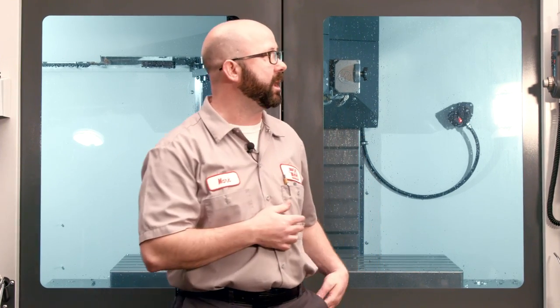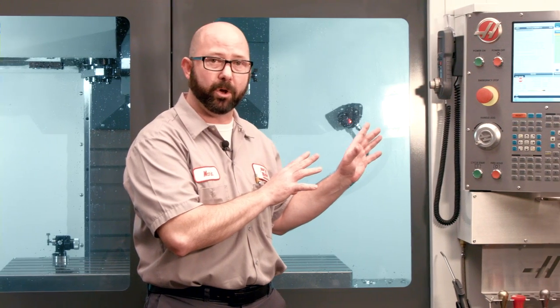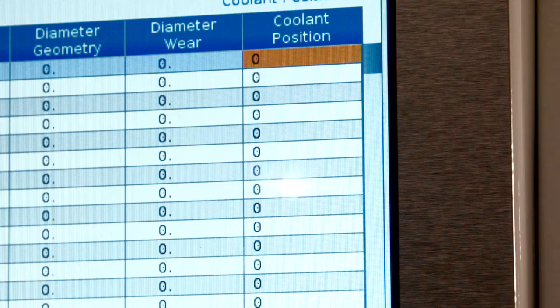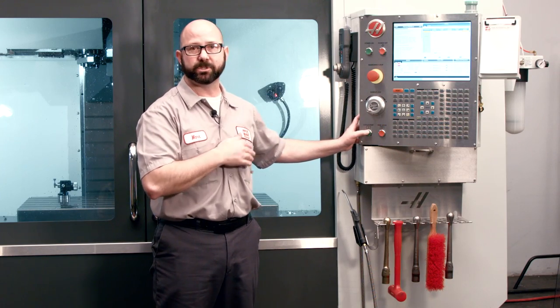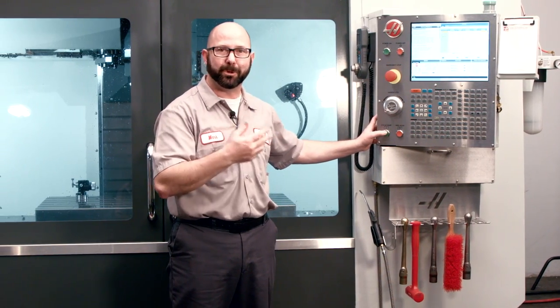I've got the macro loaded up right here. I've already touched off all my tools with the probe and I'm going to press cycle start. Just like that, the control analyzed all my tool lengths and wrote to my coolant positions for all of my tools. Pretty cool. Fun stuff.